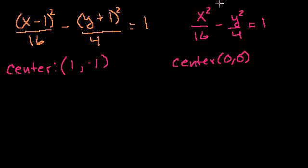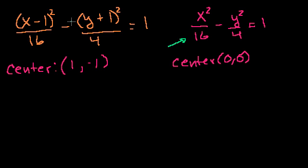The easy way to graph the shifted hyperbola is to really graph the standard one, but shift it so you use the center at 1, negative 1 instead of 0, 0. So let's figure out the slopes of the two asymptotes for the standard form, and then shift those slopes appropriately for our hyperbola. I always like to solve for y when graphing a hyperbola.